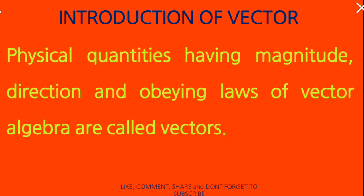Physical quantities having magnitude, direction, and obeying laws of vector algebra are called vectors. Physical quantities are nothing but quantities one can measure by using any one of the measuring instruments. For example, you can measure the length of a stick, the weight of any object, or the time. All these are measurable physical quantities.